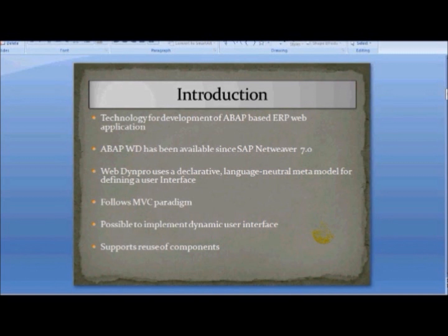Then SAP came up with BSP — Business Server Pages — which is used very widely in CRM. And then they came up with ABAP Web Dynpro. There are two versions of Web Dynpro: ABAP and Java. We'll talk about only ABAP here.